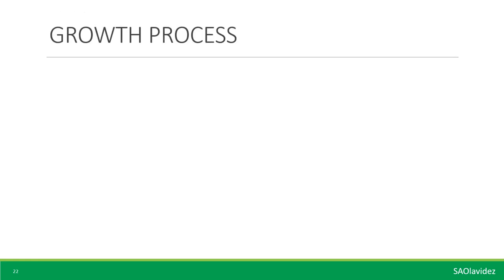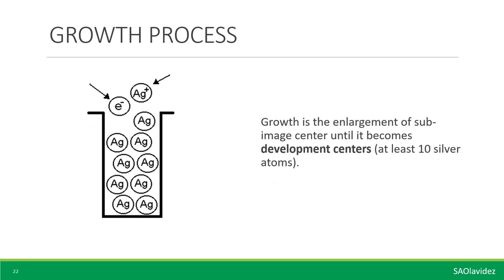The last stage is the growth process — the enlargement of the latent sub-image center until it becomes development centers. At least ten silver atoms are needed for it to become developable. In the growth process, steps four and five of the nucleation process are repeated until enough silver atoms are formed in the speck. At the end of the growth process, the silver halide crystal has produced ten black metallic silver atoms somewhere within the crystal. There may be several of these centers in the crystal, but this change cannot be detected by the naked eye because it is too small. This change must be enhanced by the developer solution, which converts all silver ions within the crystal to black metallic silver.